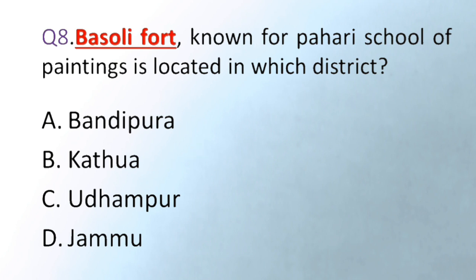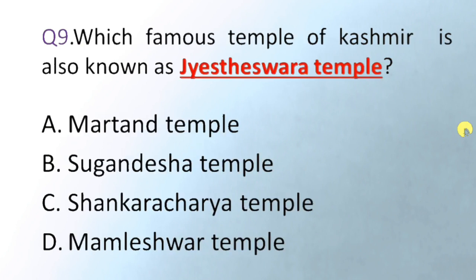Our next question is: which famous temple of Kashmir is also known as Jyeshtheshwara Temple? Option A Martand Temple, B Sugandhesha Temple, C Shankaracharya Temple, D Mamleishwara Temple. The correct answer is Shankaracharya Temple. All four of these temples are located in the Kashmir Valley.